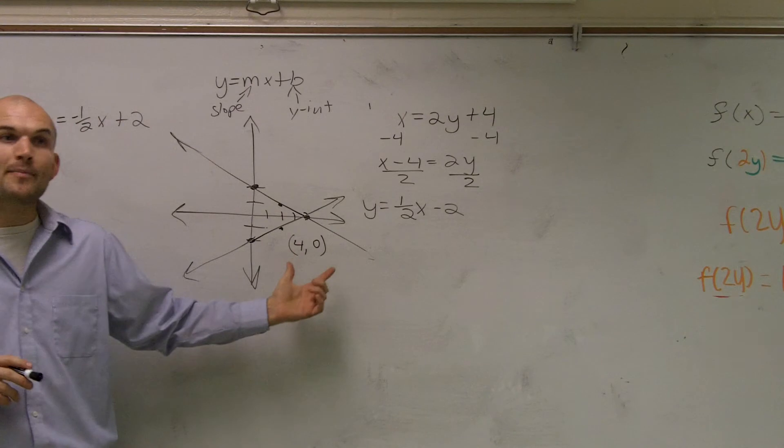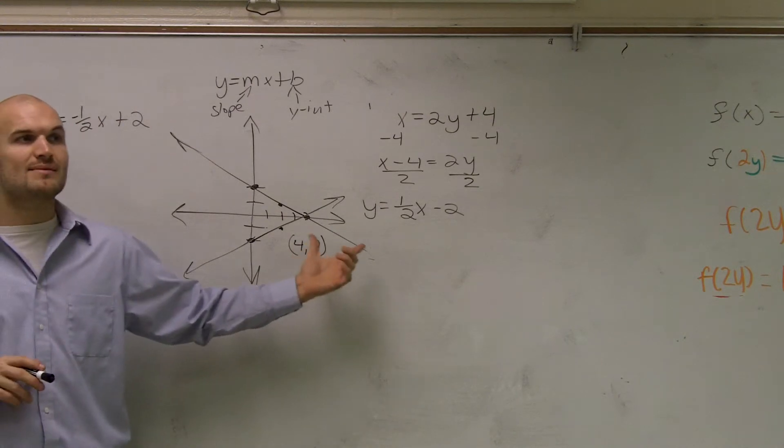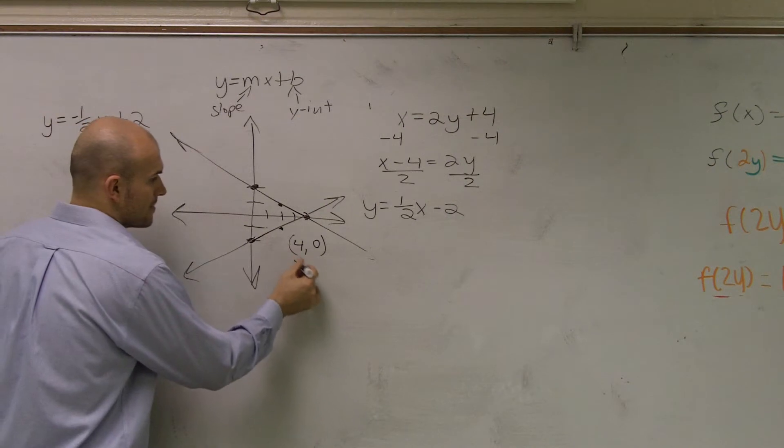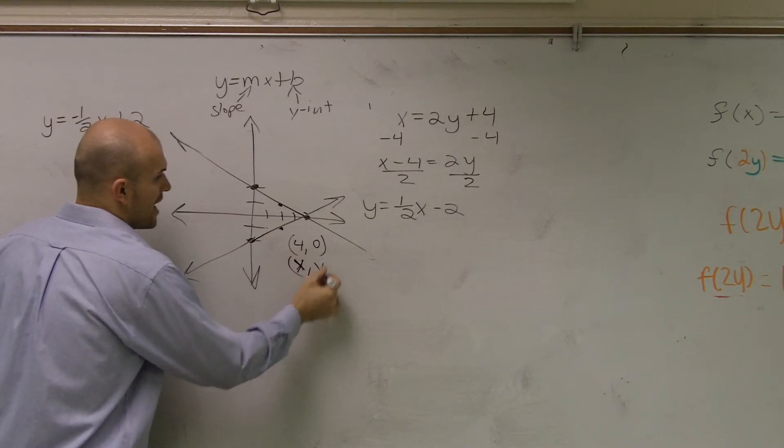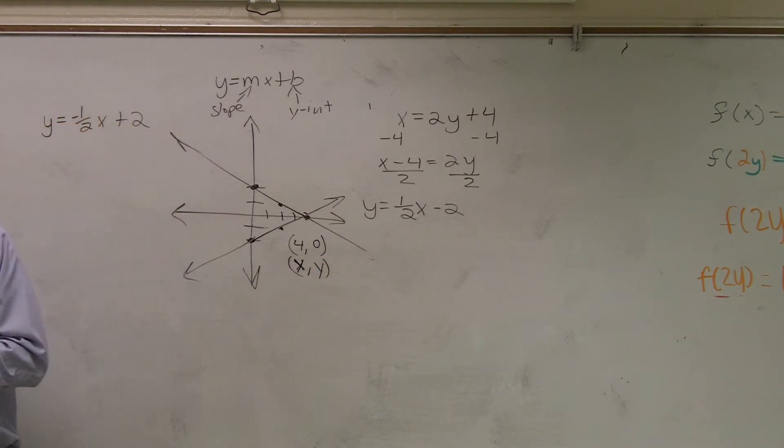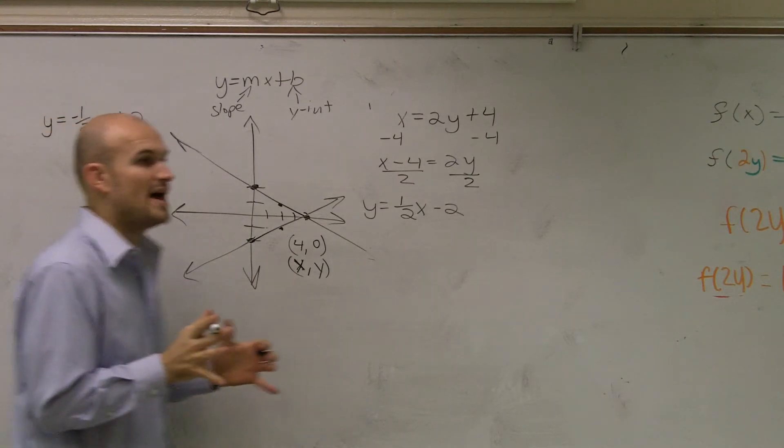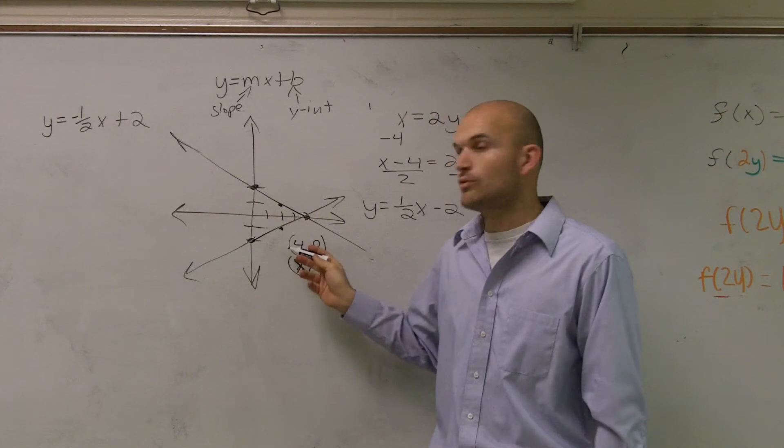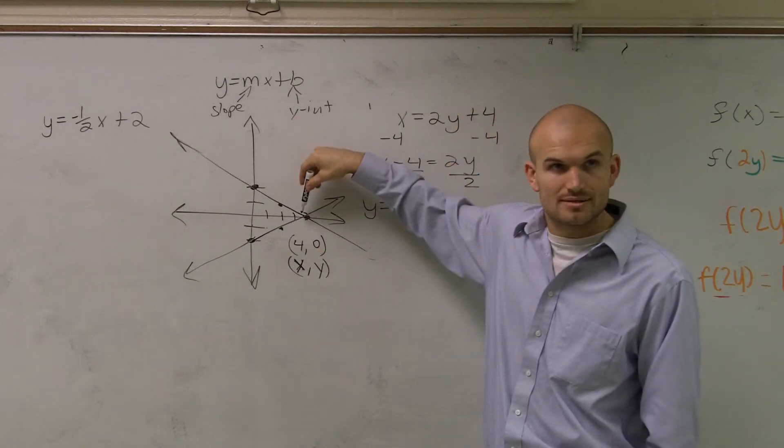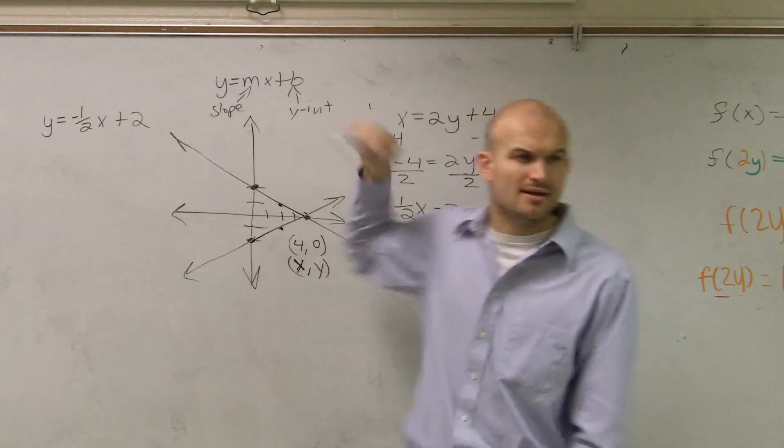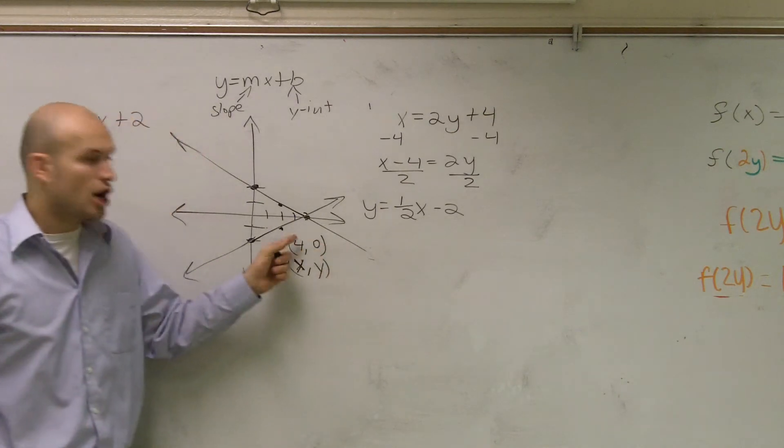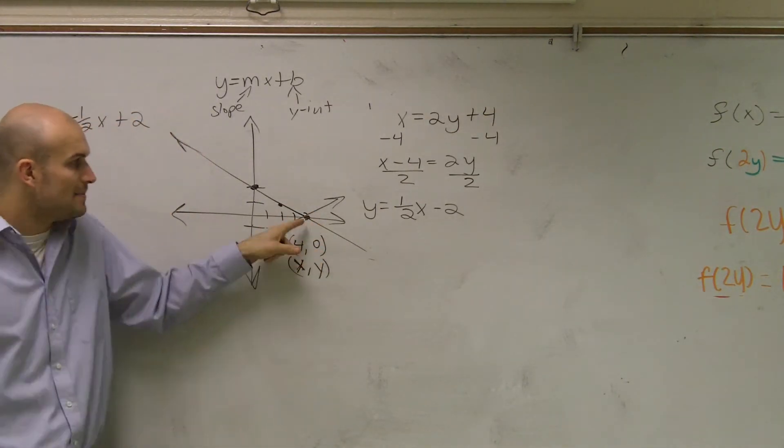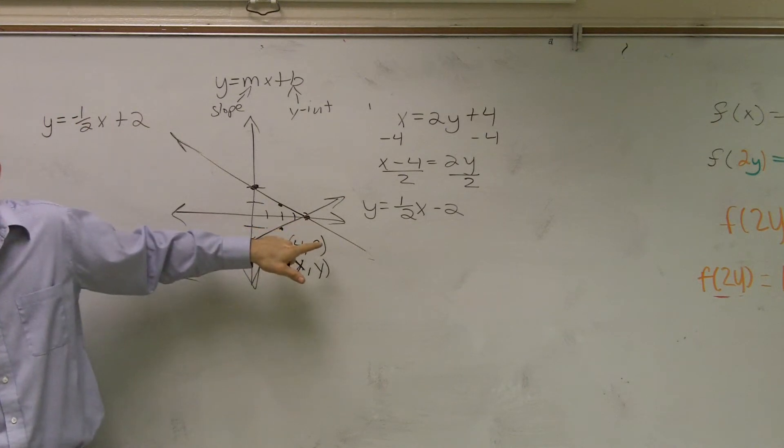Now another way we can represent (4,0) - remember (4,0) is a coordinate point, meaning it has an x and a y value. So what I'm saying is the x and the y are exactly the same for these two equations at this point where they intersect.